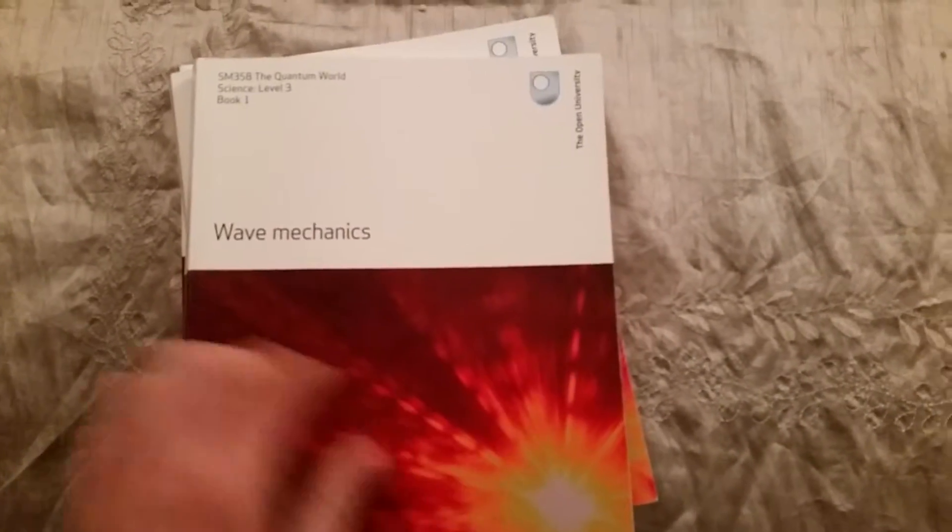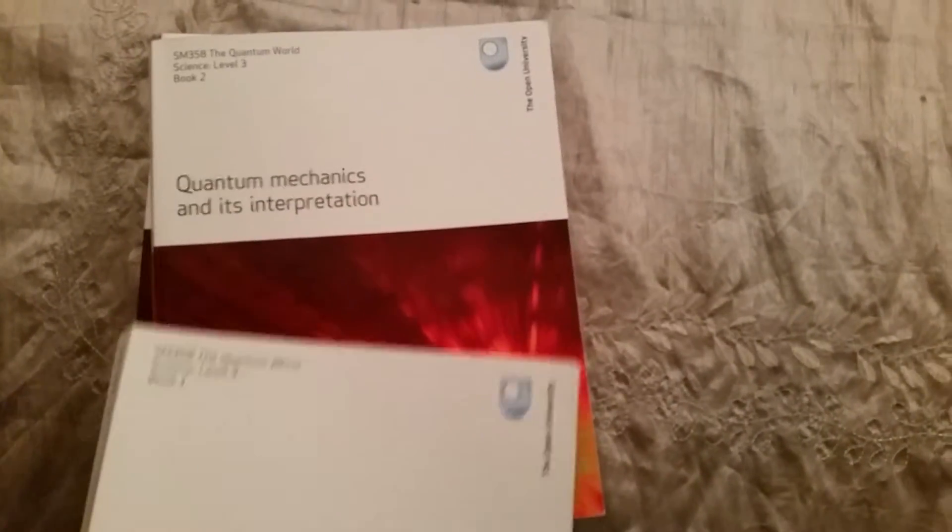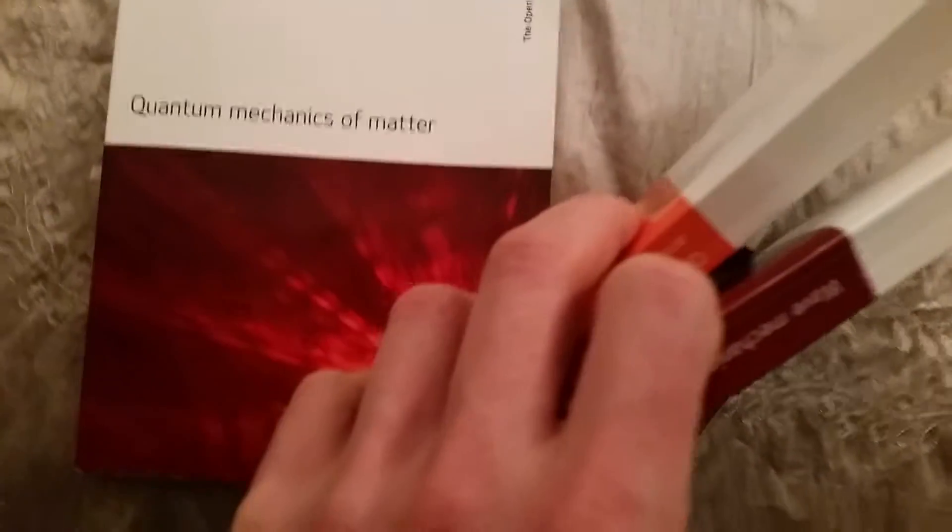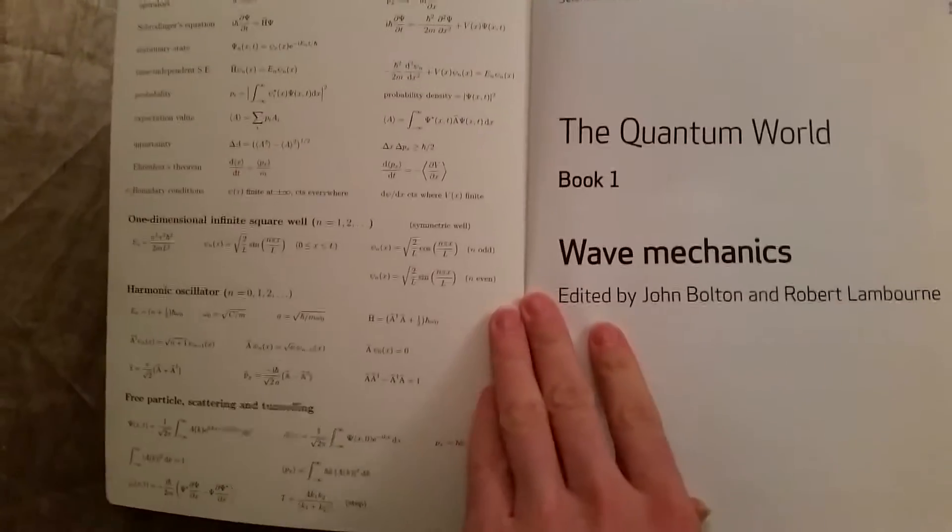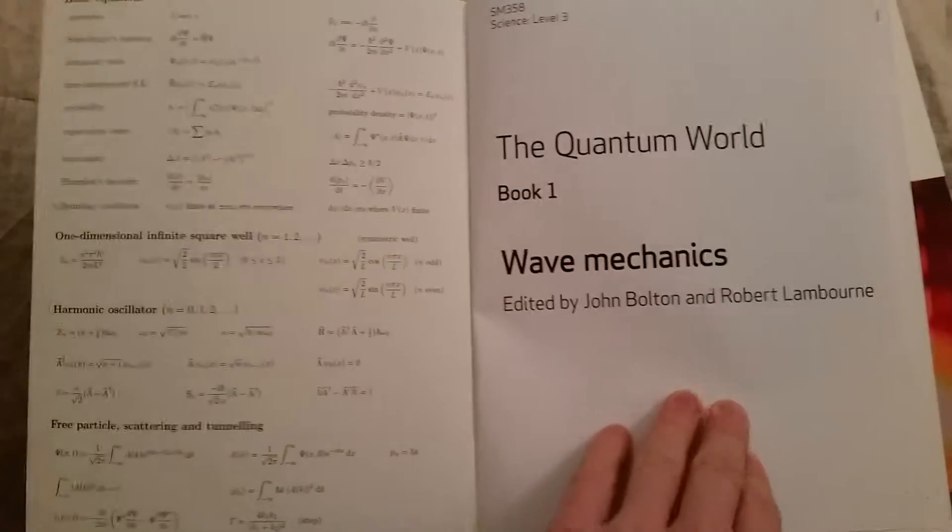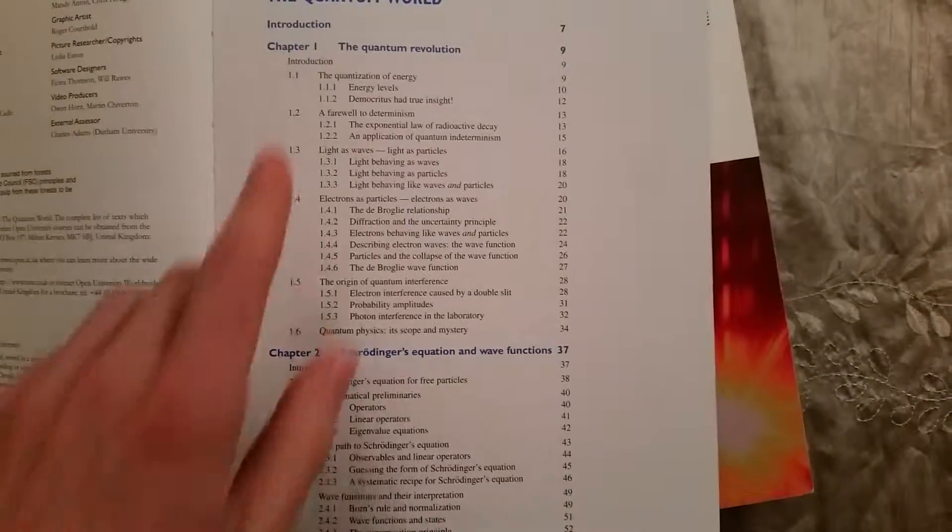It's split up: wave mechanics, quantum mechanics and its interpretation is Book 2, and Book 3 is quantum mechanics of matter. Let me just take you through it. You get the various different formulae on the front covers of all the books, very similar to what you would get for the exam.